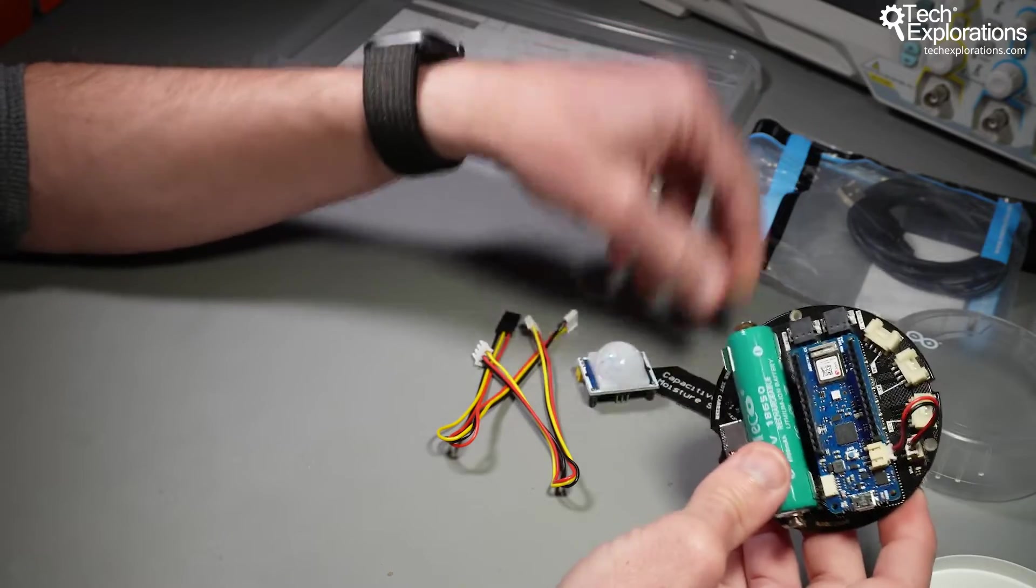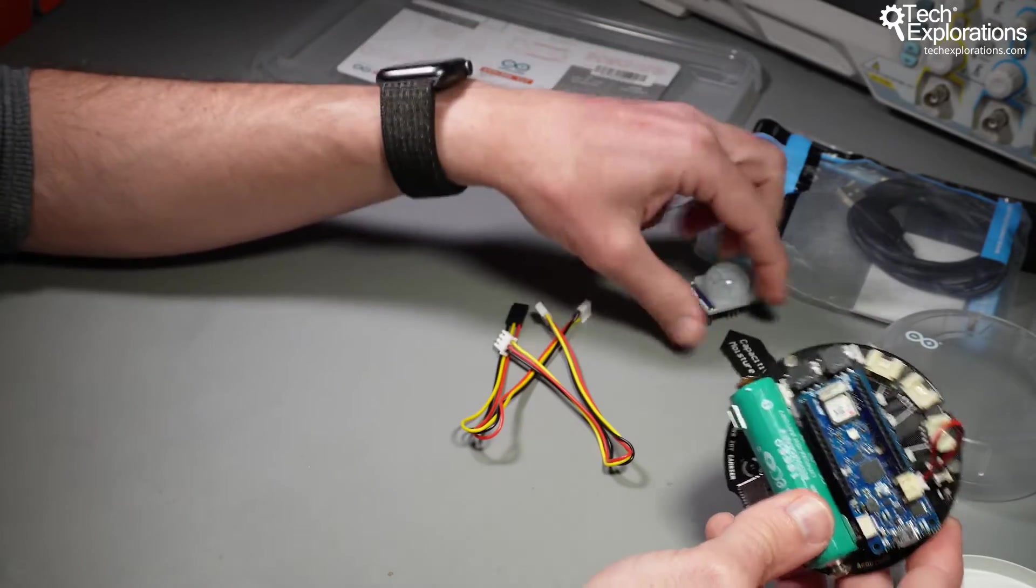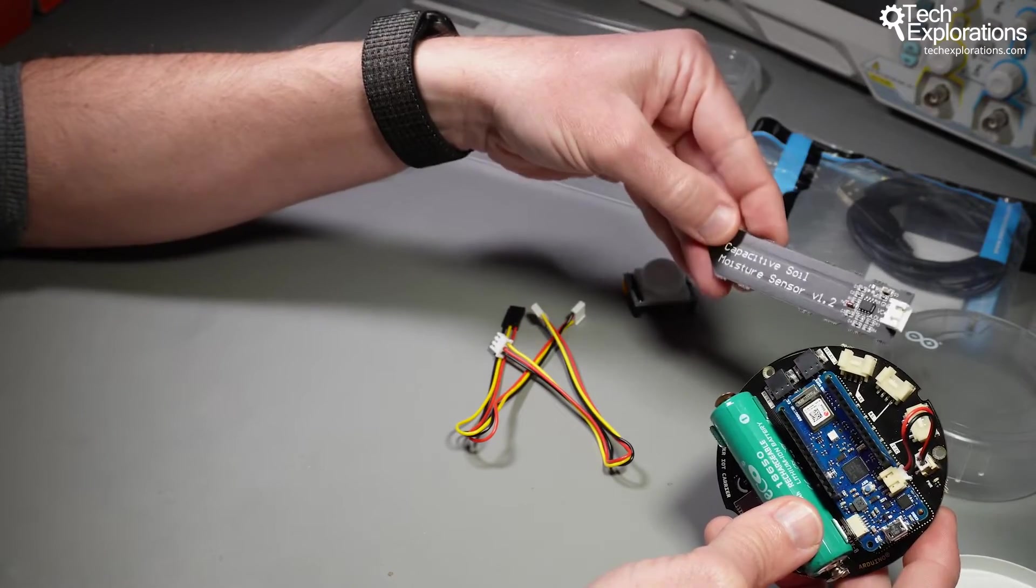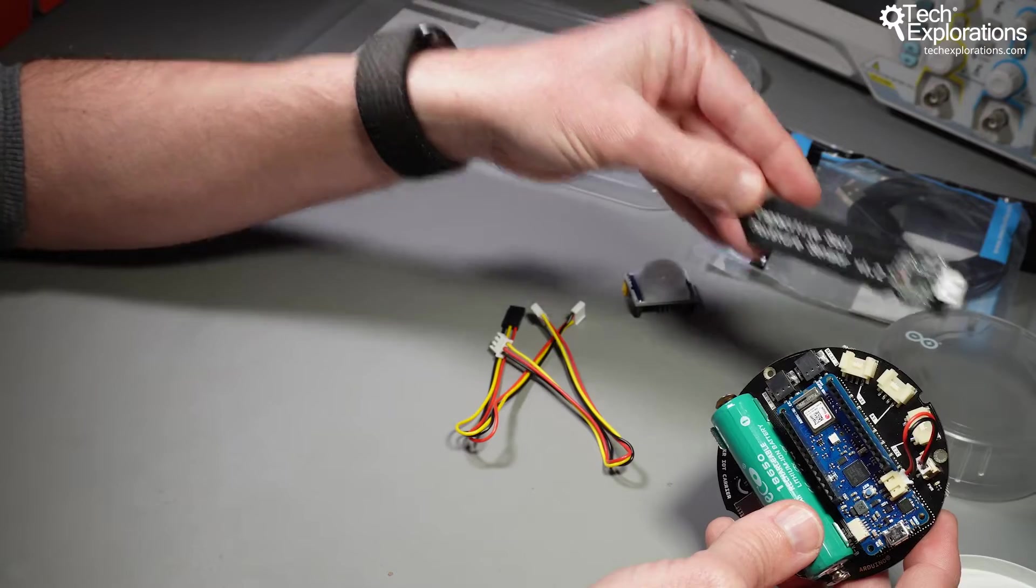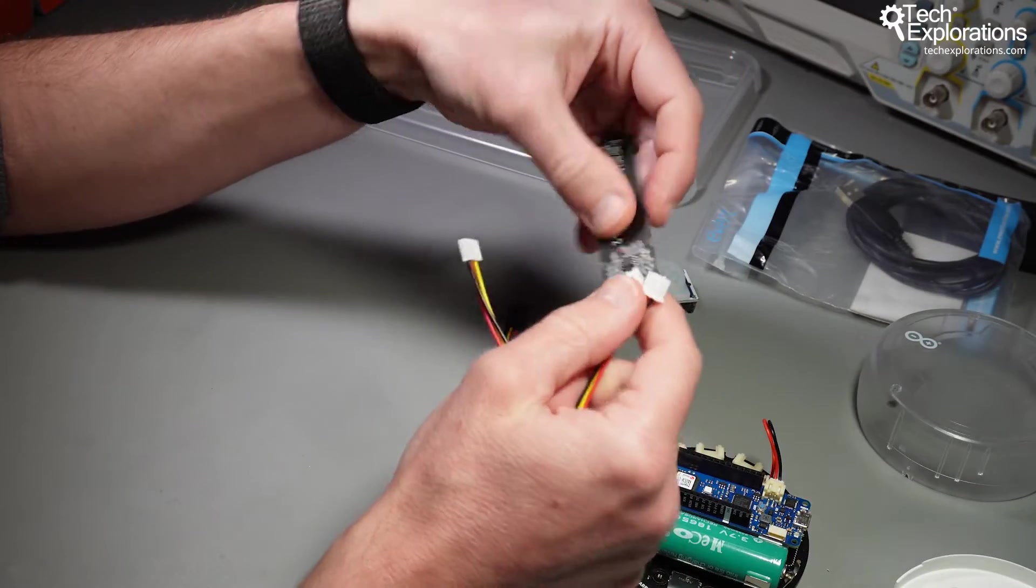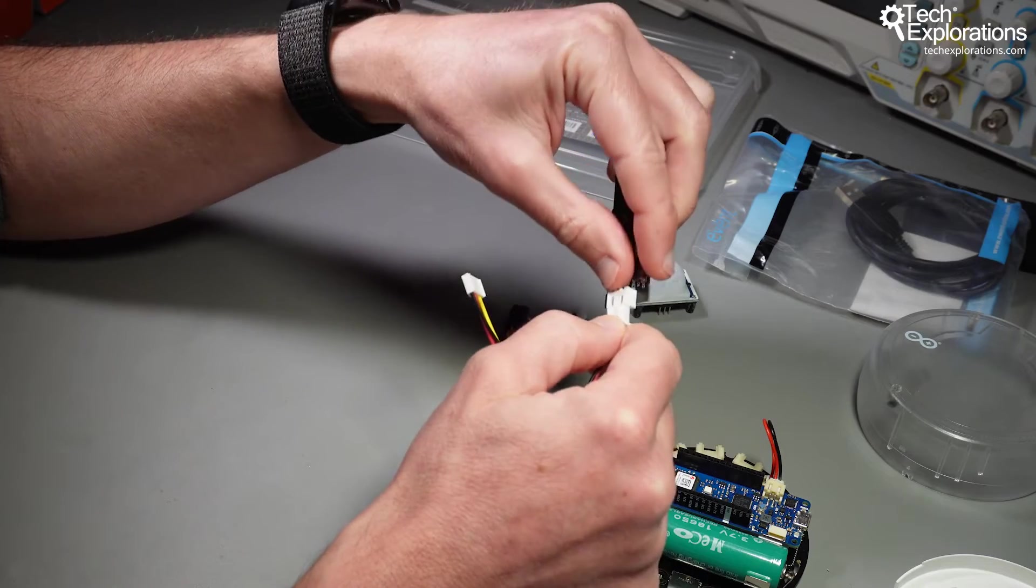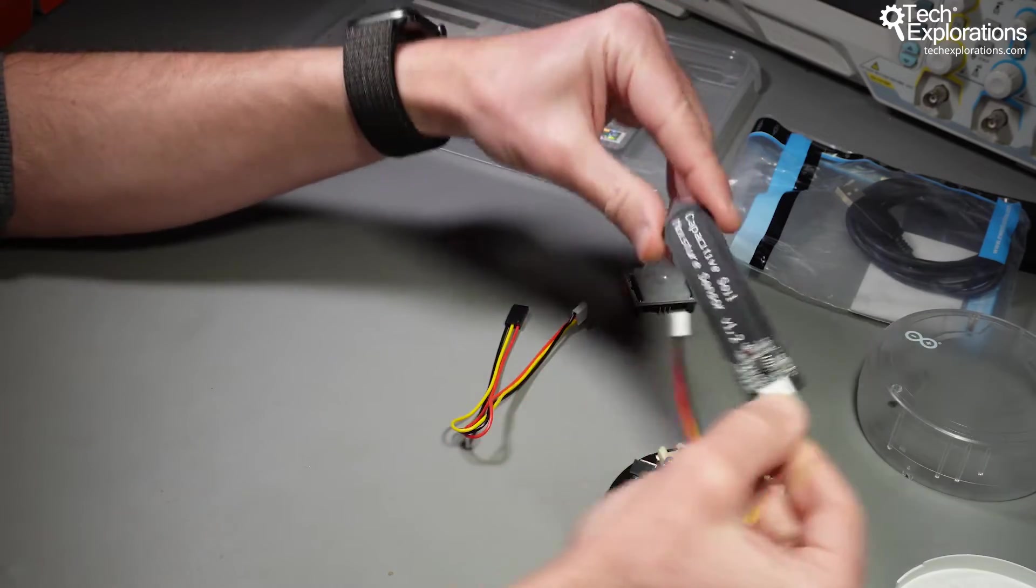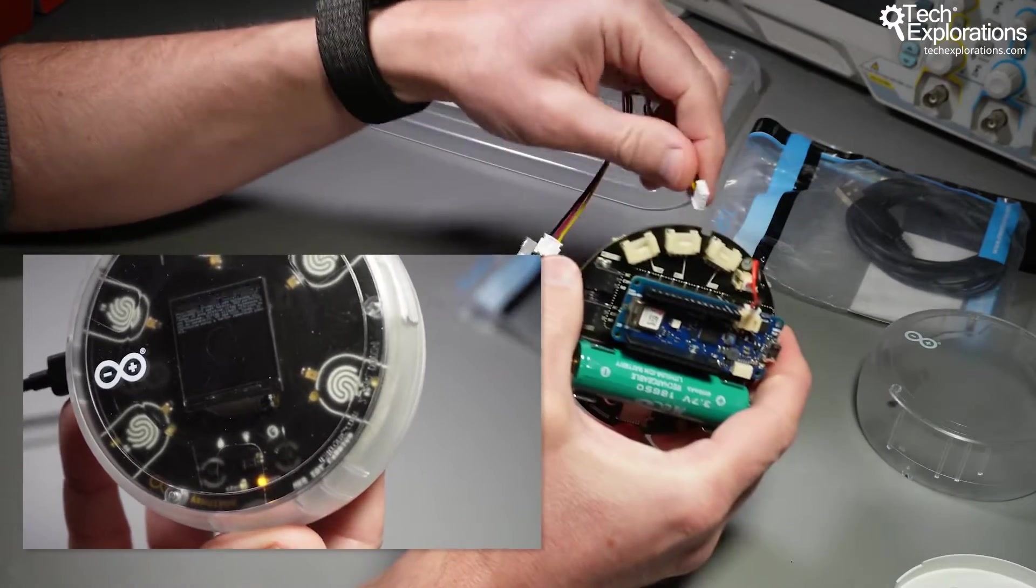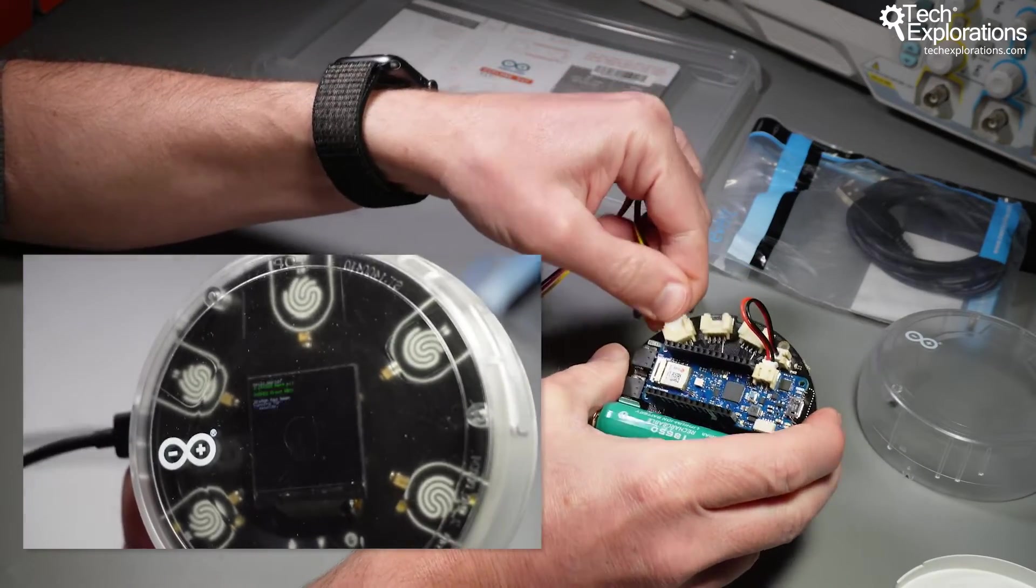You've got the capacitive soil moisture sensor. You can use one of these cables to connect your moisture sensor to one of the analog ports on the carrier board, and that would look like this.